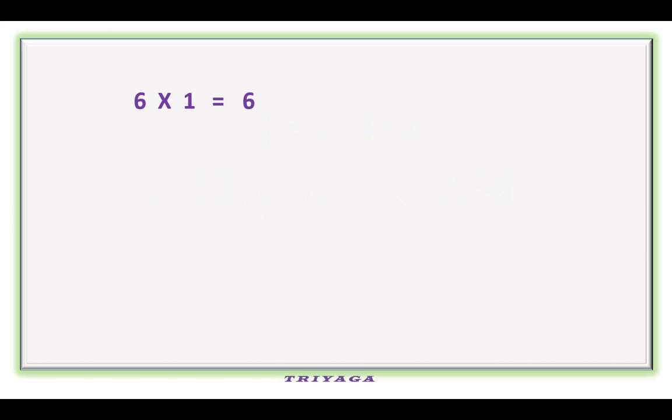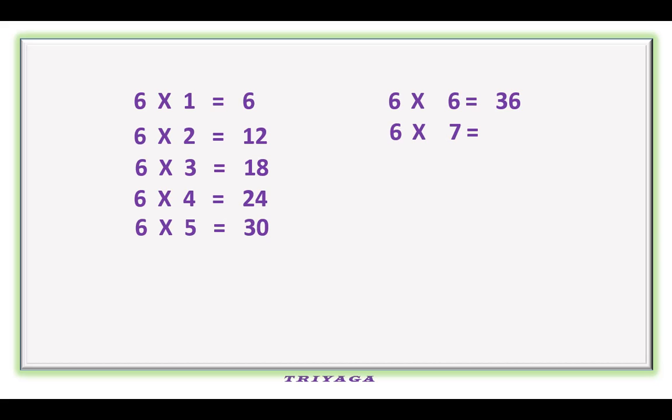6 1s are 6, 6 2s are 12, 6 3s are 18, 6 4s are 24, 6 5s are 30, 6 6s are 36, 6 7s are 42, 6 8s are 48, 6 9s are 54, 6 10s are 60.